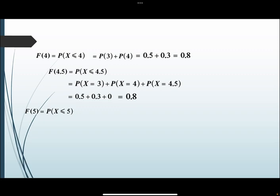F(5): وهي عبارة عن P(X ≤ 5)، وهي تساوي P(X = 3) زائد P(X = 4) زائد P(X = 5)، أي أن 0.5 زائد 0.3 زائد 0.2، الناتج يساوي 1.